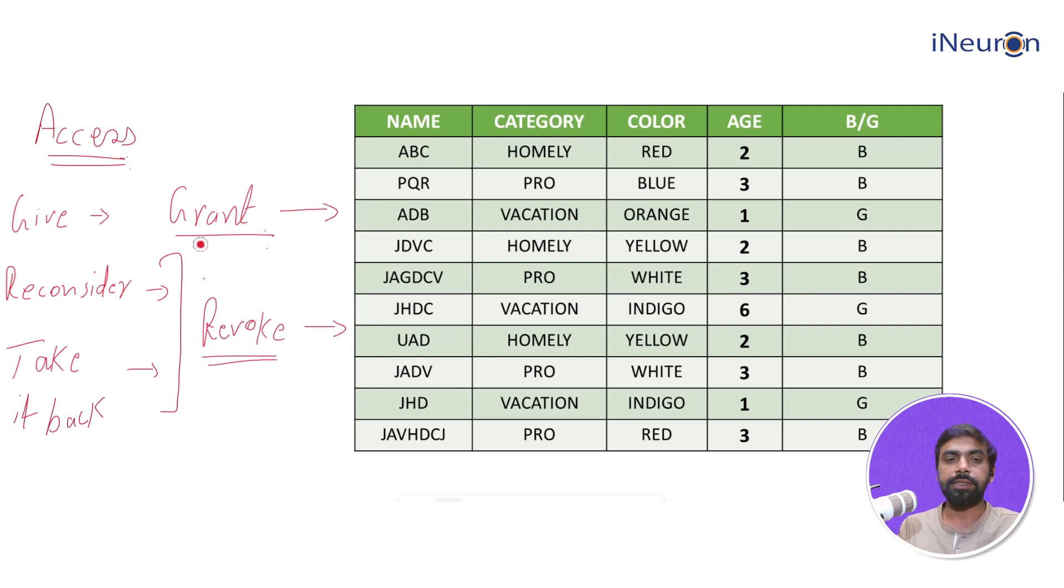You would understand that D and L would remain the same. D stands for data and L for language. It's just the middle alphabet in the middle word that is changing: M for manipulation, Q for query, C for control, and D for definition. This way we can easily remember these languages. So grant and revoke are nothing but data control language. With these commands you can decide whom to give control of your database or database management system and to what extent.